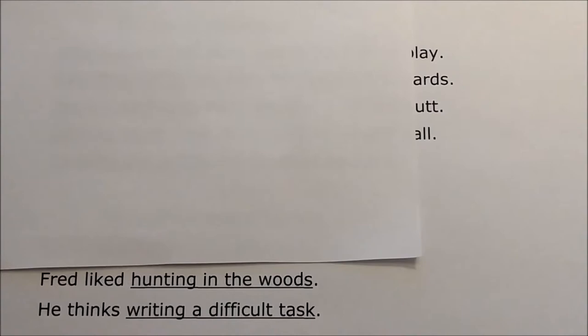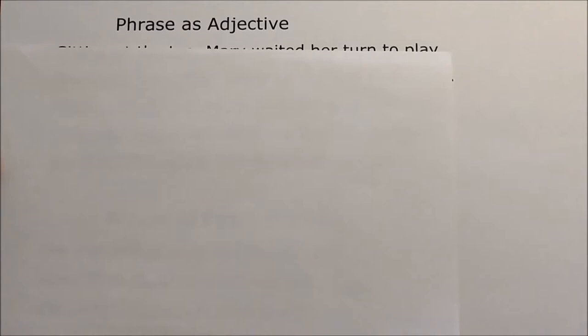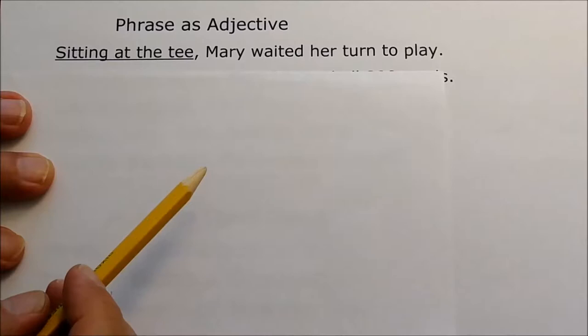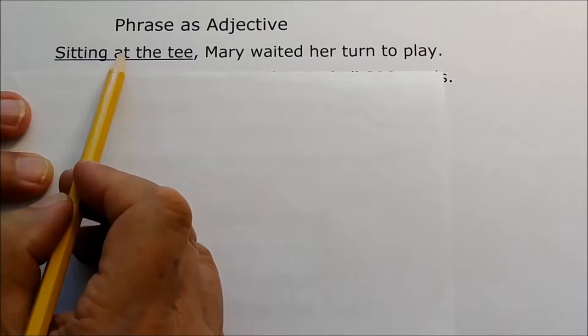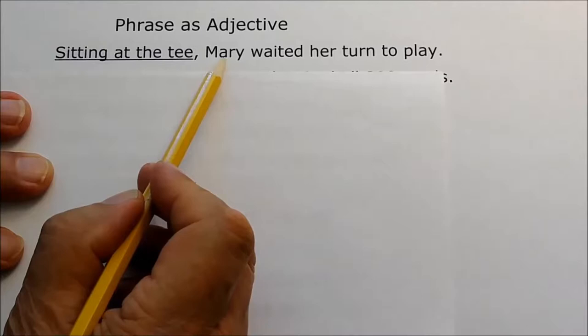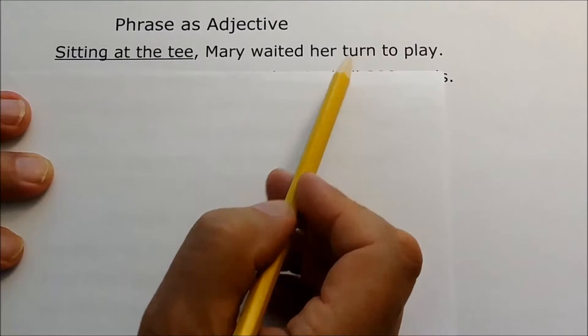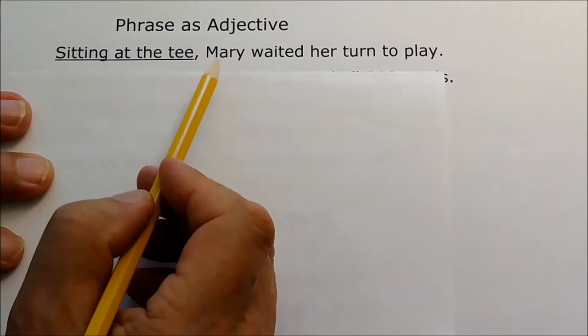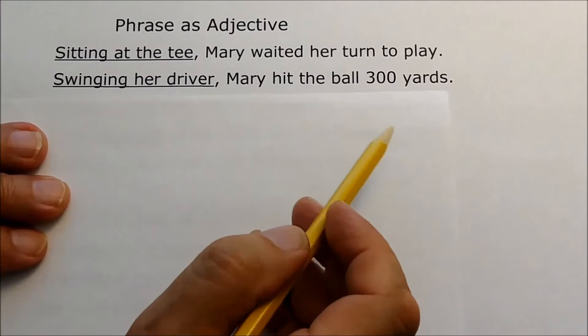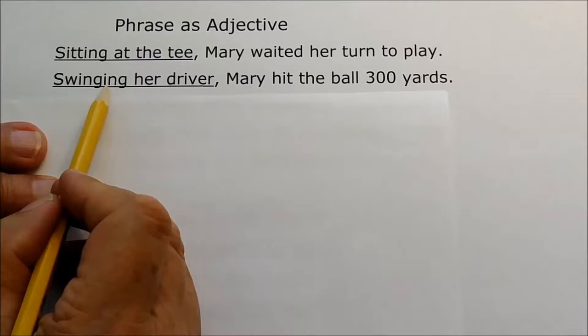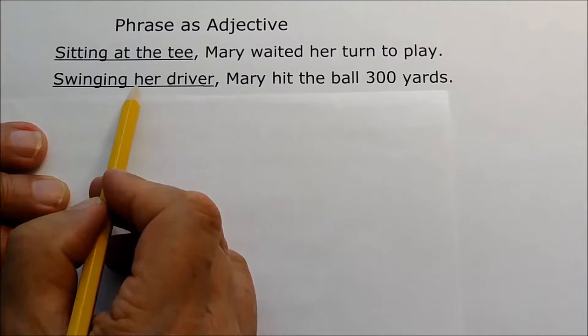This time we're going to look at an I-N-G word acting as an adjective — a phrase acting as an adjective. Sitting at the tee, Mary waited for her turn to play. Sitting with the I-N-G on the end — sitting at the tee is a phrase and it's acting as an adjective describing Mary. Mary is the subject of the sentence. Swinging her driver, Mary hit the ball 300 yards. Again, we have an I-N-G form of the verb. Swinging her driver acts as an adjective phrase describing Mary.